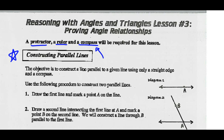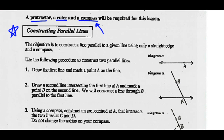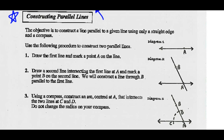The big instrument we really need is the compass. If you haven't got one, you can ask to get one from your teacher. Constructing parallel lines — the objective is to construct a line parallel to a given line using only a straight edge and a compass. Use the following procedure to construct two parallel lines.